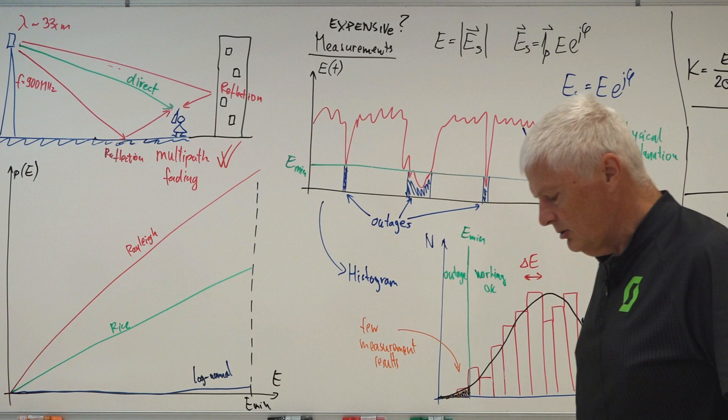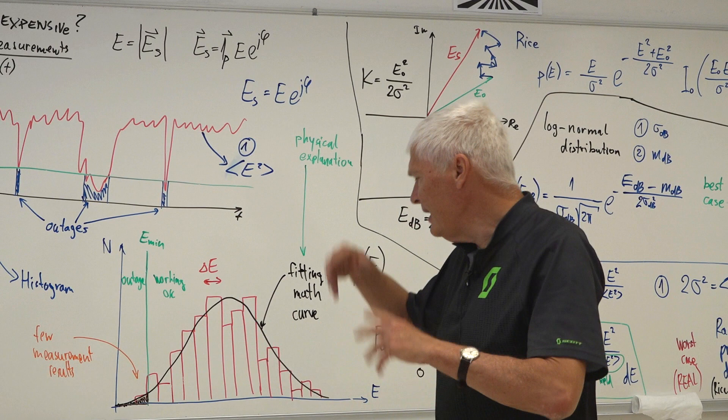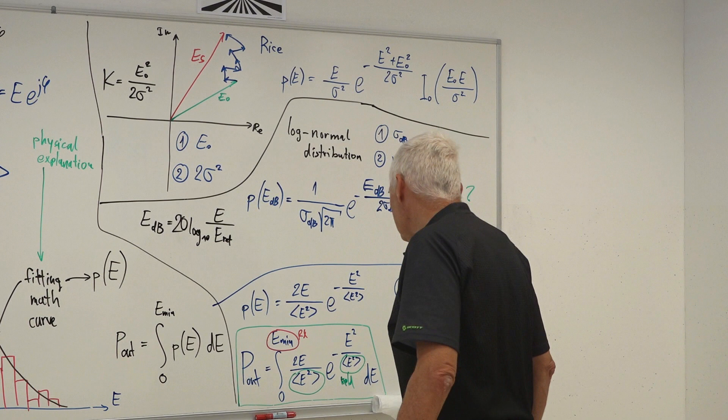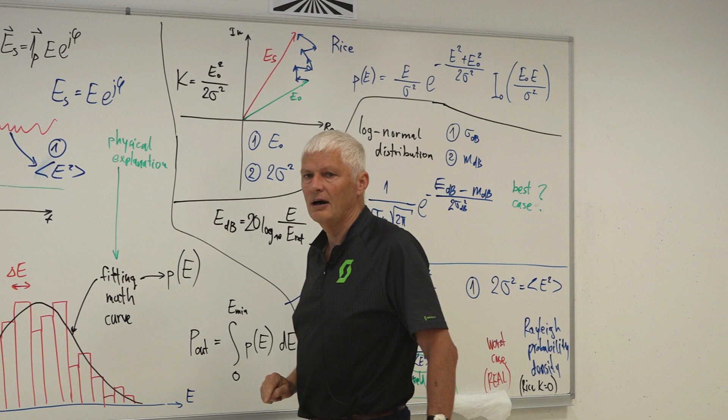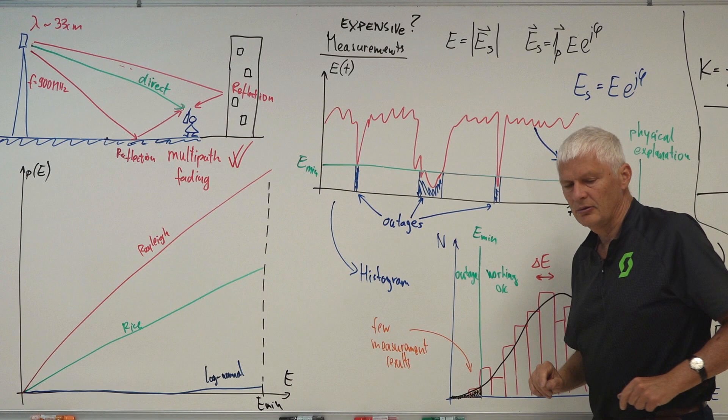This is a typical example of how you can fool your customers, or how a vendor may fool you by using the wrong distribution. Just playing with mathematics, everything looks fine. But it's important to understand that we need a physical explanation for the distribution we are fitting to our measurement data. Without a physical justification, we can get quite different outage probabilities for our radio link.